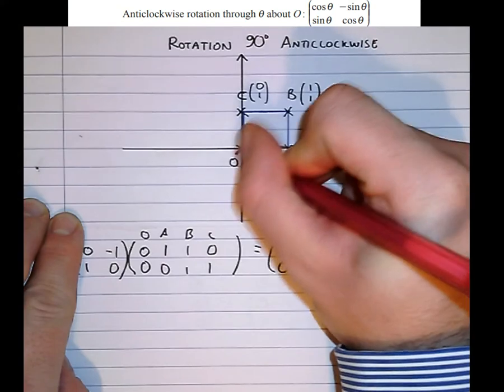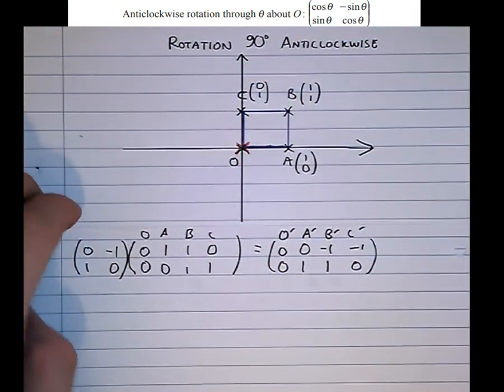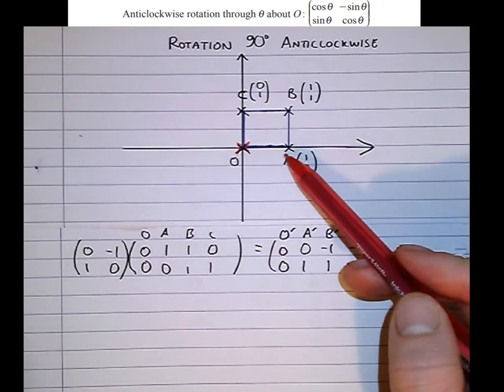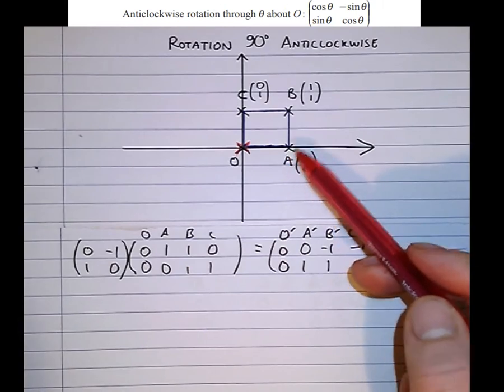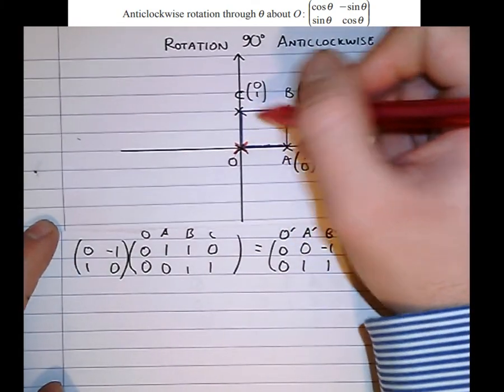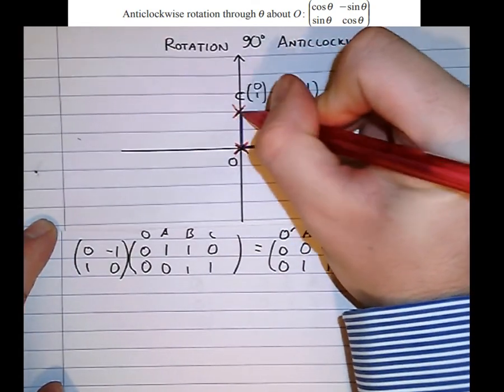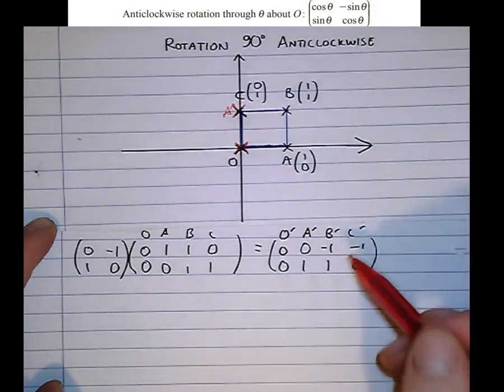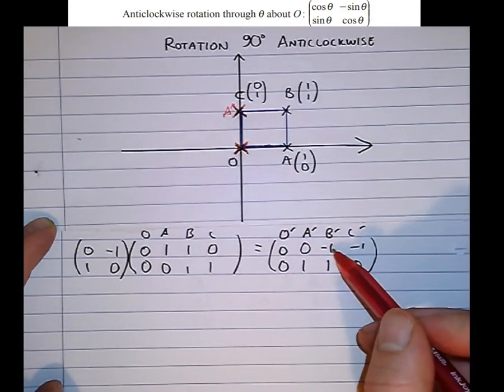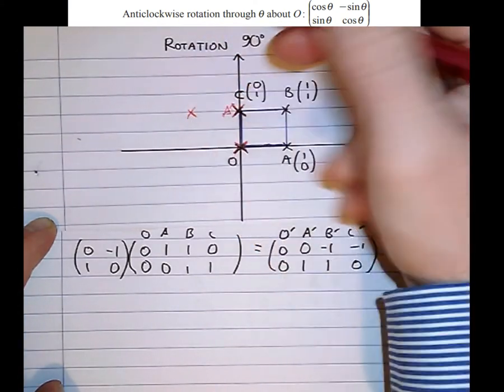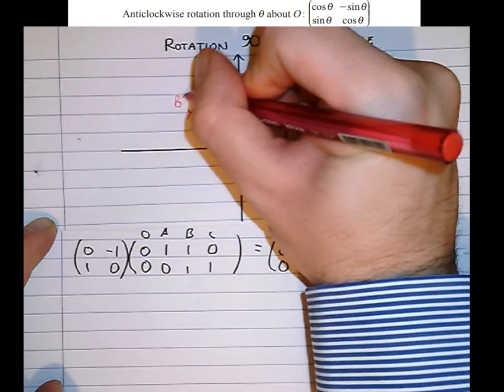So the origin stays on itself. So I originally used blue pen, using red now. Then A, the image of A, ended up at 0, 1. So A ended up here. A dash, I'm going to call that. Then B ended up with minus 1, 1. So B there. B dash.